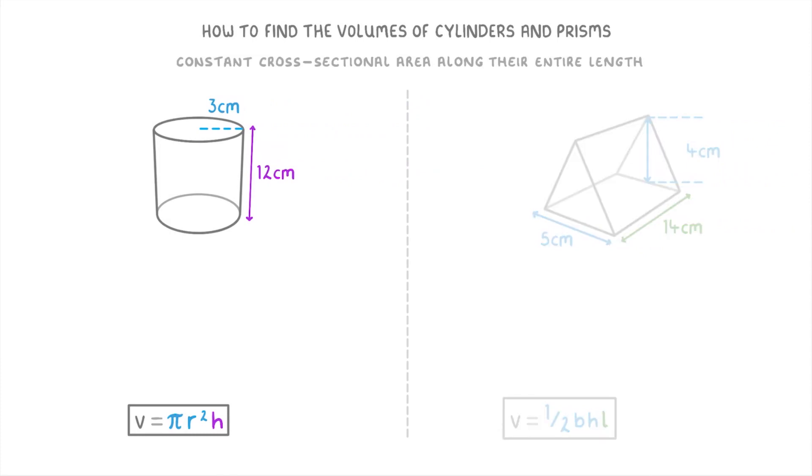So for the cylinder, we can see that it has a radius of 3cm, and a height of 12cm. So to work out the cross-sectional area of the circle, we'd do pi times the radius of 3 squared. And then we'd multiply that by the height of 12. Which, if we wanted our answer in terms of pi, would be 108 pi cm cubed, because 3 squared times 12 is 108.